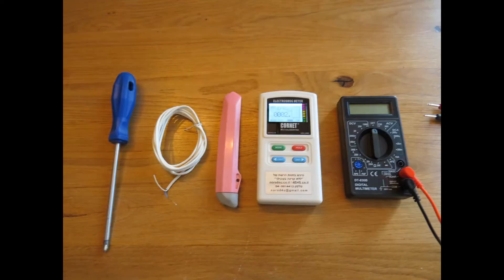We will need a screwdriver, a telephone wire, a knife, a cornet meter and a digital multimeter with measurement of volt in DC.